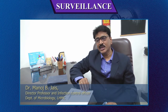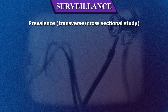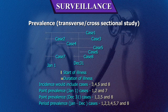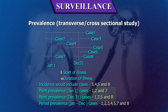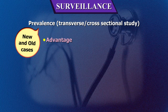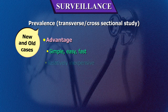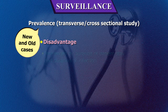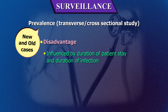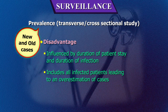Methods of surveillance: Prevalence (or transverse/cross-sectional) study is the number of cases of healthcare-associated infections in a defined patient population either during a specified period of time (period prevalence) or at a specified point in time (point prevalence). Advantages: it is simple, easy, fast, and relatively inexpensive, and useful when initiating a surveillance program. Disadvantages: it is influenced by duration of patient stay and duration of infection, and includes all infected patients — old and new — which may lead to overestimation of cases.